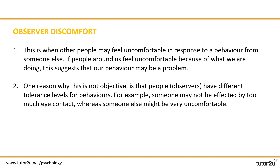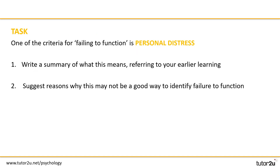So for number one we've got an outline of observer discomfort — you can pause the video again to compare it to yours in more detail. One reason why this is not objective is that people — in other words, the observers — have different tolerance levels for behaviors. For example, someone may not be affected by too much eye contact, whereas someone else might be very uncomfortable. Where there are personal differences in discomfort, it's not a great way of determining who is and who is not abnormal.